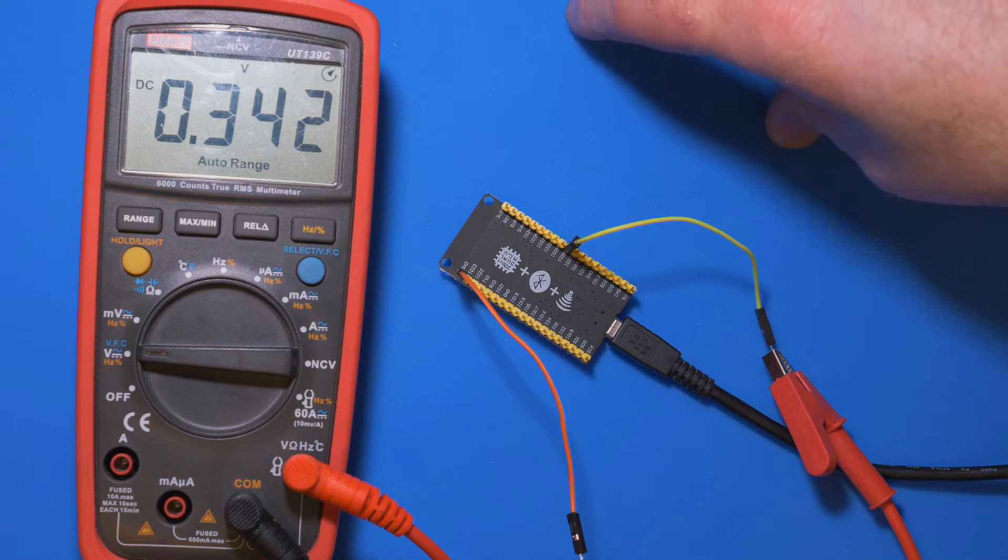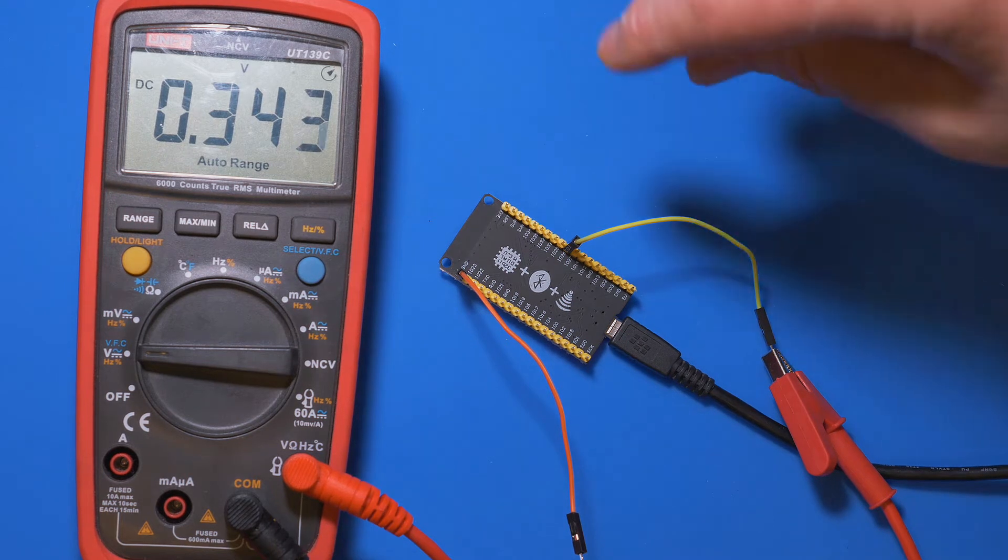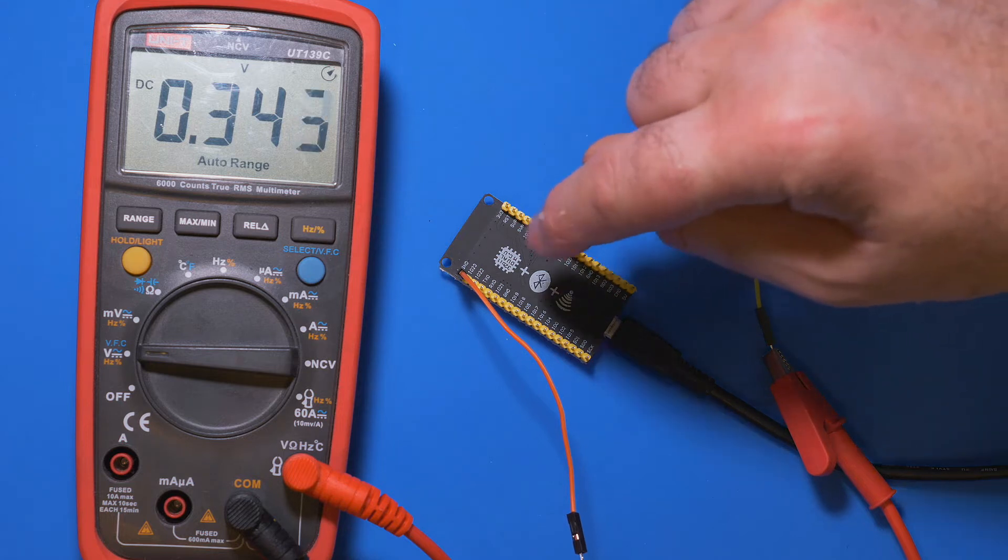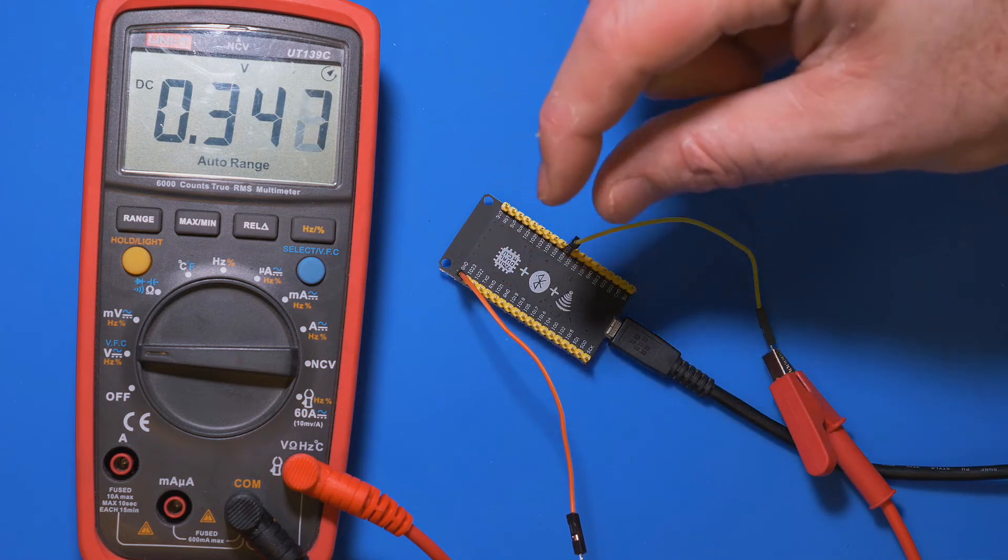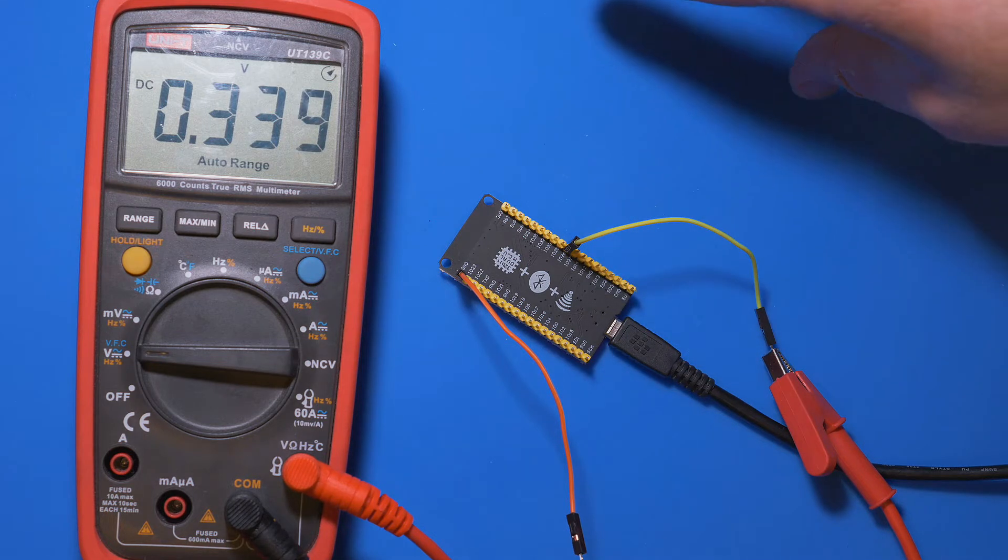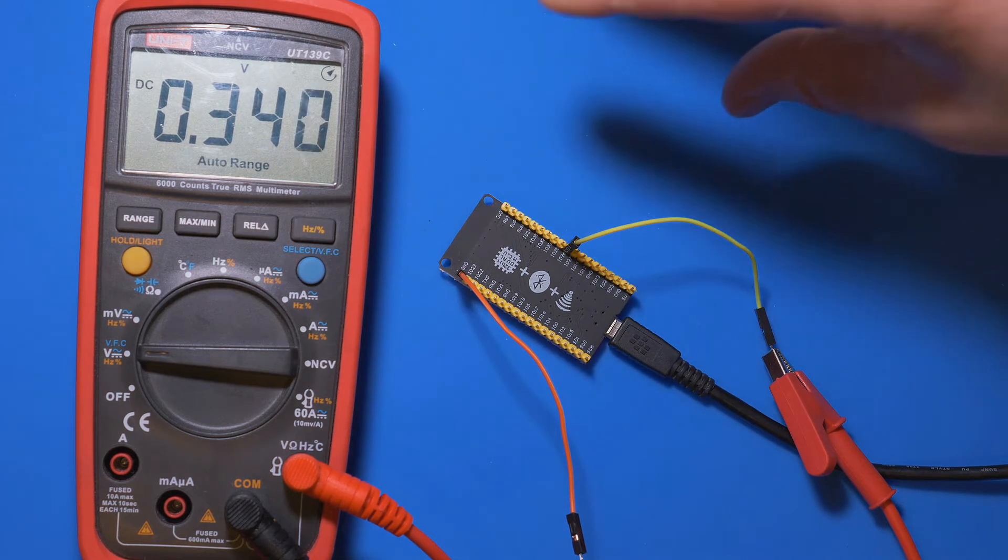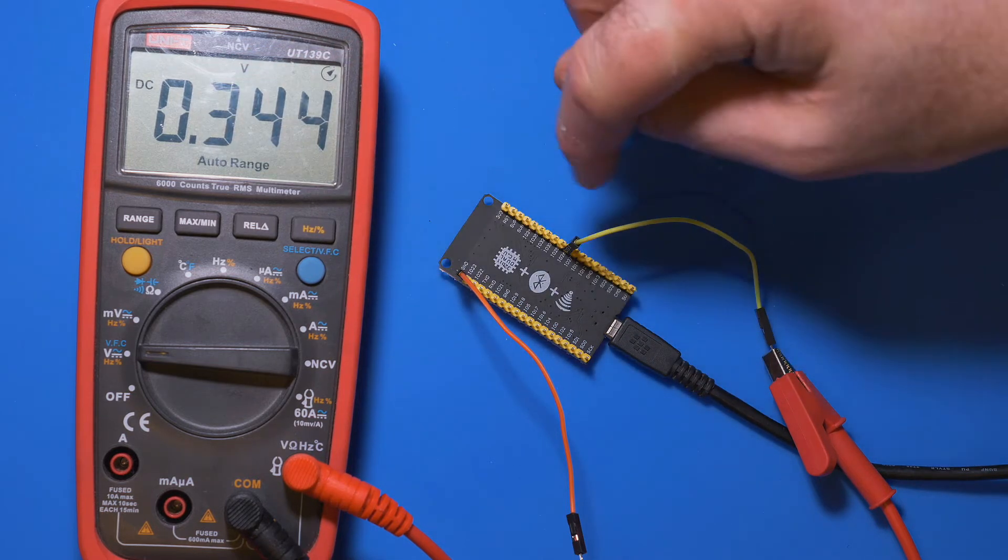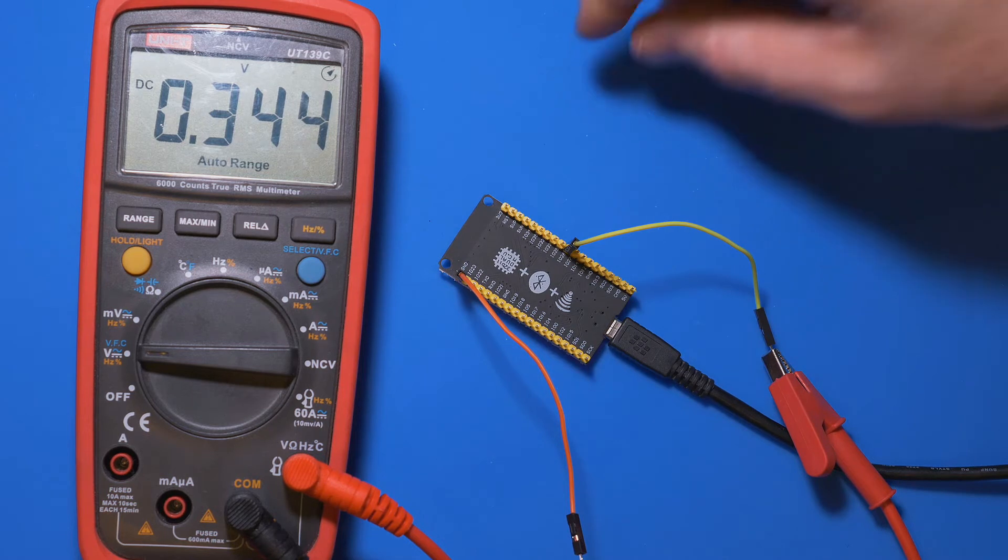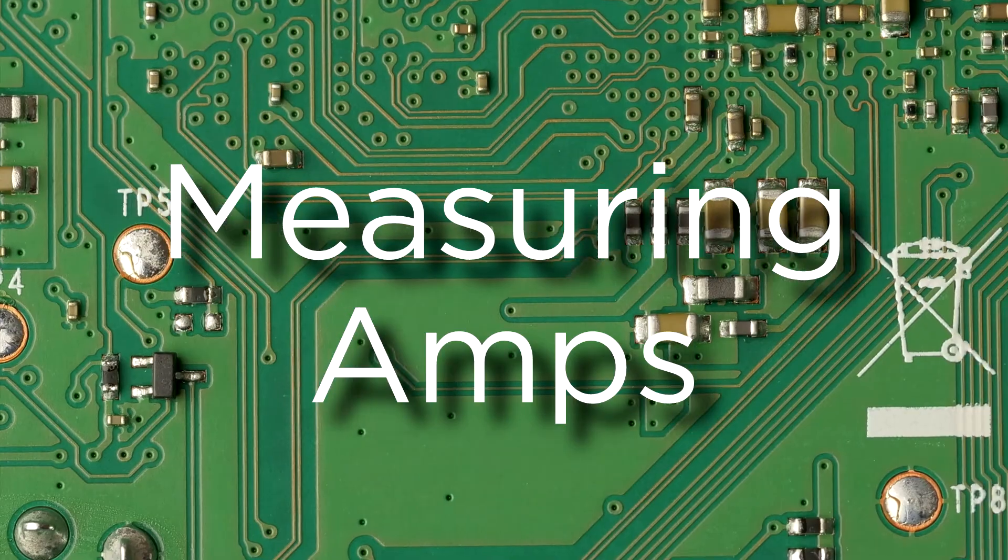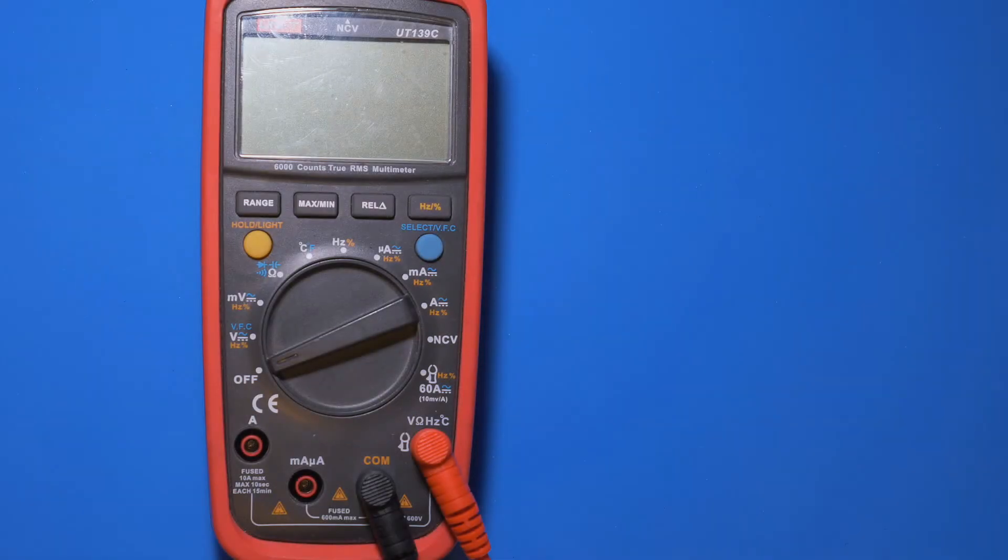But this is why we use things like pull-down resistors, which will be connecting that pin to ground using a small resistor of about 10 kilo-ohms. And I'll explain a bit more about pull-up and pull-down resistors a bit later on in the series. But it's good to keep in mind why you might be seeing a small voltage coming out from one of these GPIO pins when you haven't activated it.